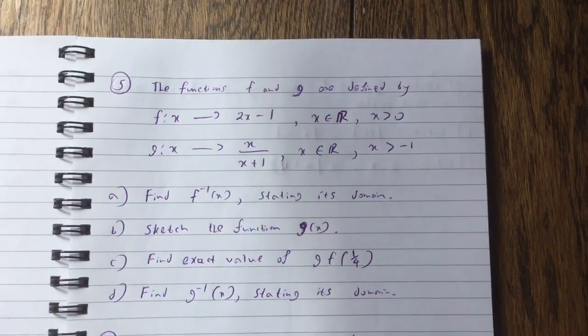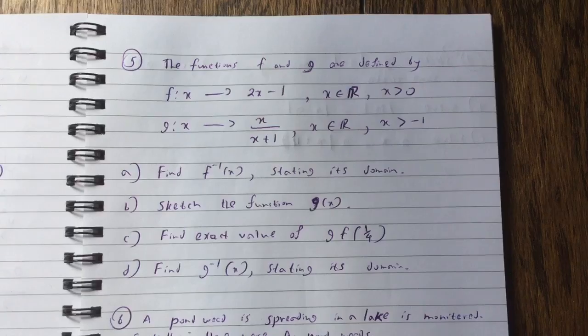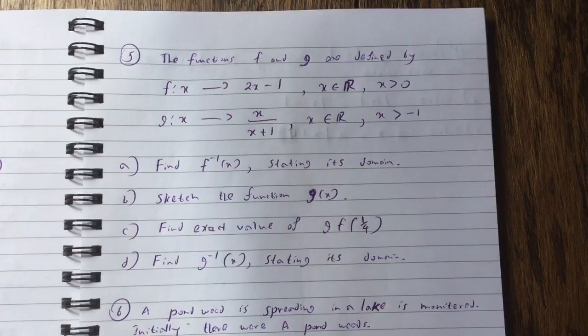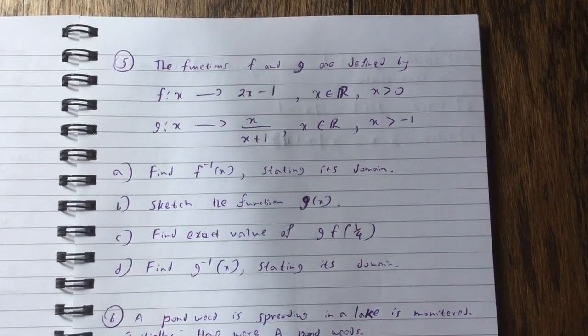Question 5, the functions f and g are defined by f of x is 2x minus 1, x is a real number, x greater than 0. g of x is x over x plus 1, x is a real number, x greater than minus 1.